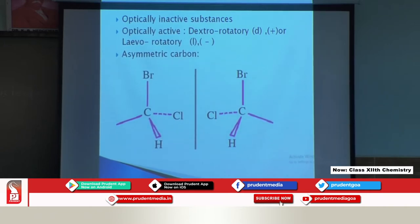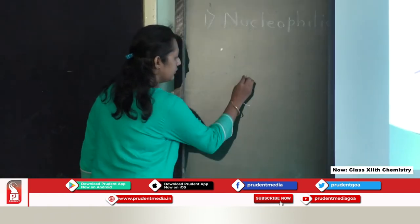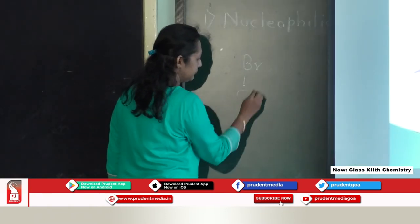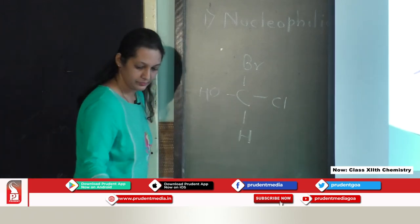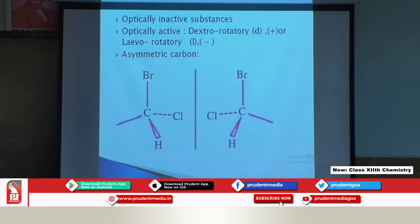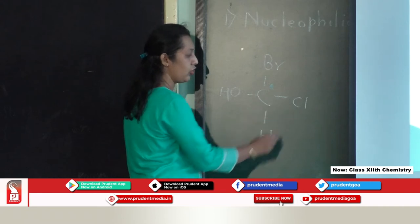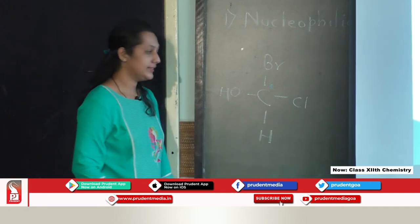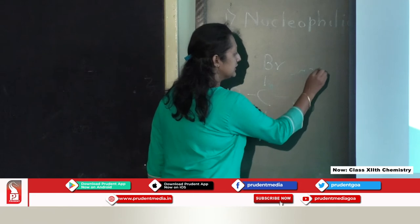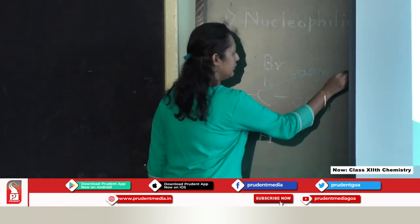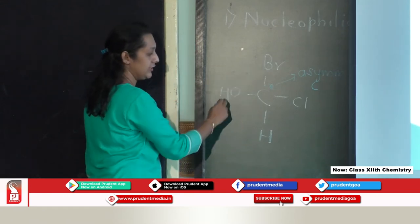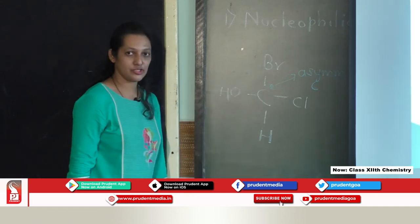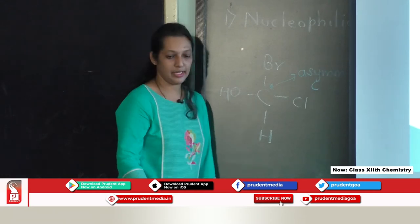Next, we have the asymmetric carbon. What do we mean by asymmetric carbon? The carbon which contains different atoms or groups attached to it is known as the asymmetric carbon. If you look at this structure, this carbon contains different atoms or groups attached to it, so that is known as the asymmetric carbon.